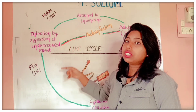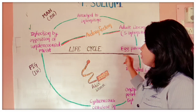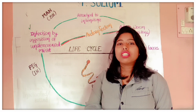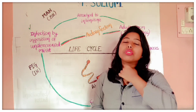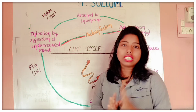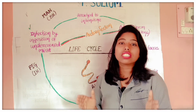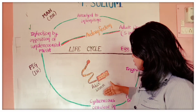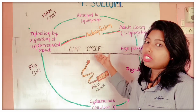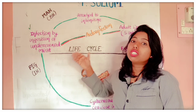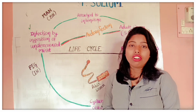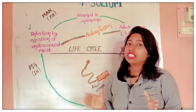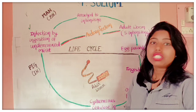If a human takes this contaminated food and water, the same cycle that occurs in the pig will now repeat in the human. The eggs travel through the esophagus, stomach, and intestine, where cysticercus larva can form in the human body. This is different from the normal cycle — in auto-infection, cysticercus larva forms in the human, causing a disease called cysticercosis, which is the most important disease caused by Taenia solium.